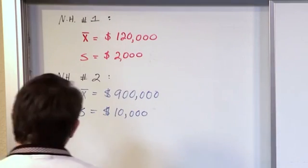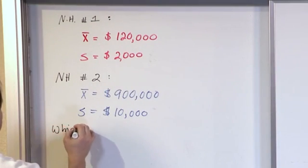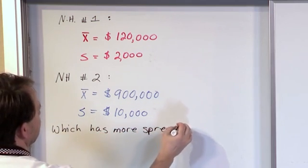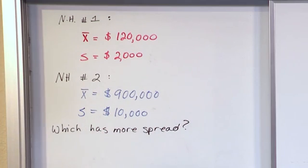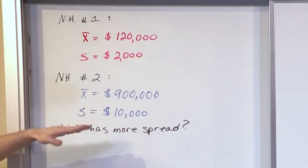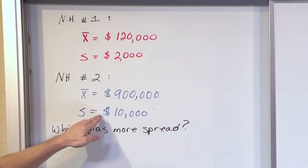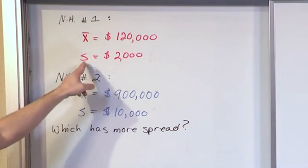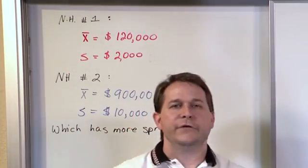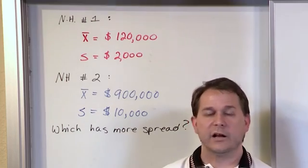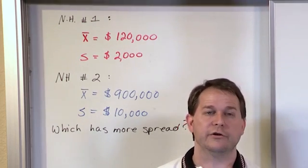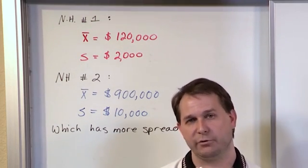My question to you: which has more spread — neighborhood one or neighborhood two? My first gut is to say neighborhood number two is more spread because the standard deviation of house prices there is ten thousand dollars, whereas the standard deviation here is only two thousand dollars. So it would stand to reason that neighborhood two has a lot more spread in house costs, because a ten thousand dollar standard deviation is a very large spread.